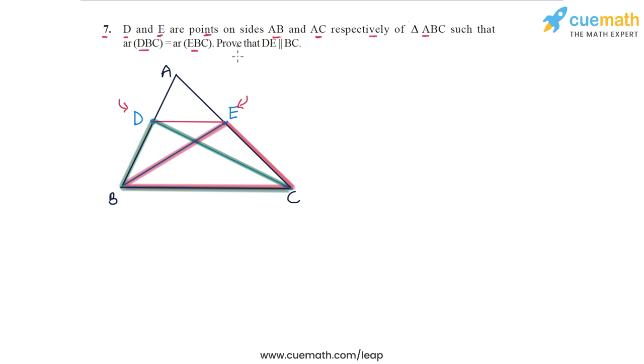So these two triangles have equal areas. We have to show that DE is parallel to BC. This is actually a straightforward question. We will make use of the result that two triangles on the same base and with equal areas must lie between the same parallels.